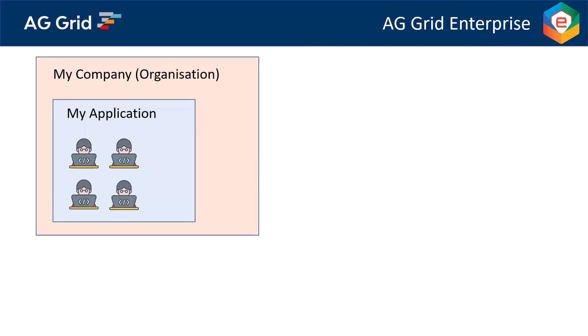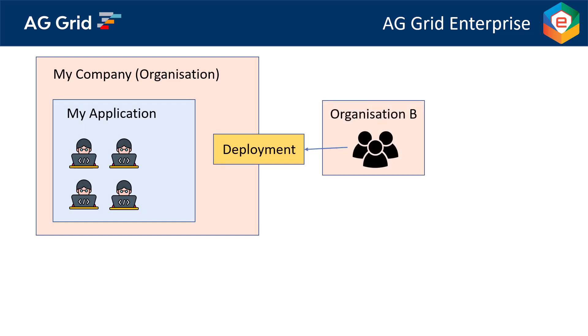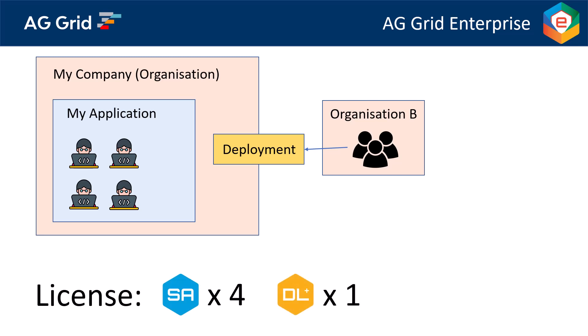Now consider four front-end developers where the application will be used outside of the organization. We would need a Single App license for four developers and additionally a deployment license to cover each deployment. An example would be a bank project where the application is used outside the bank — the users could be employees of another bank or business, or individuals at home using a service the bank provides, such as an online trading platform or personal online banking.